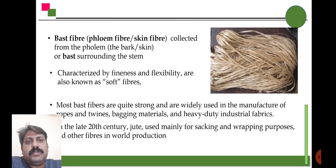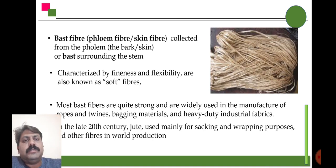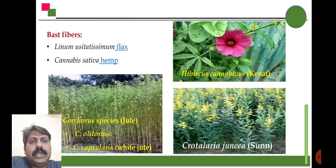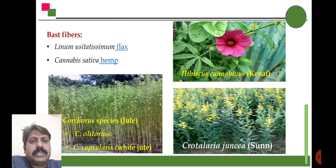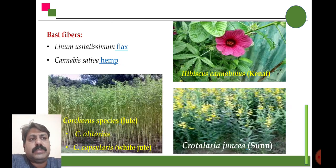Jute is also one of the important fibers extracted from plant species. Important plant species that produce fibers include Linum, Cannabis sativa, and Corchorus — which we commonly call jute. We also use bast fiber from Hibiscus and from the species Crotalaria juncea.